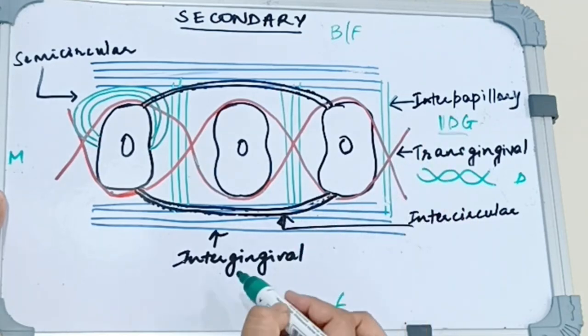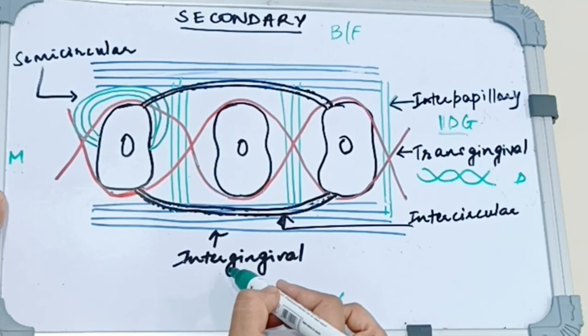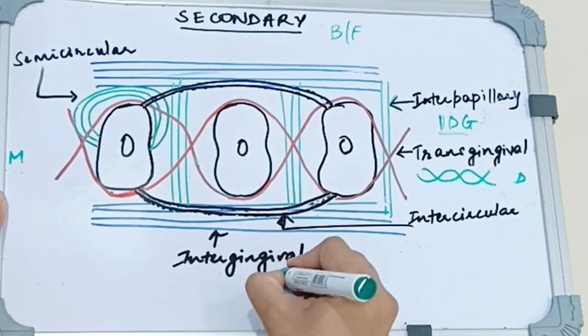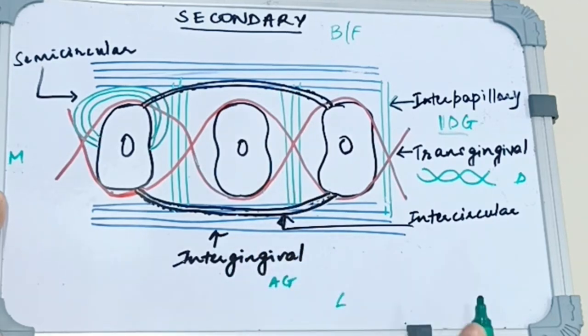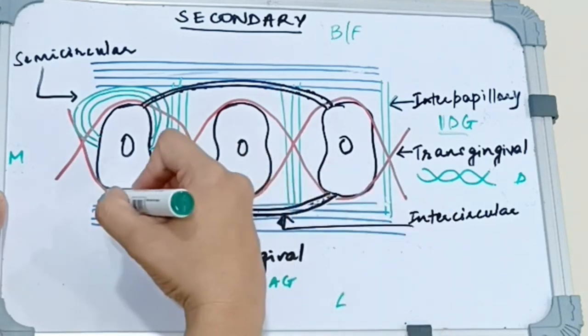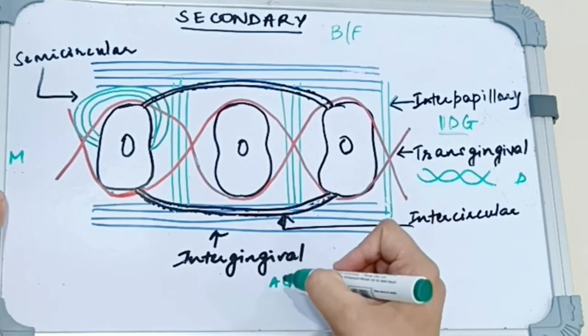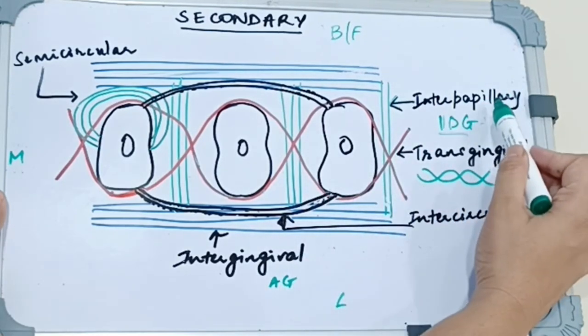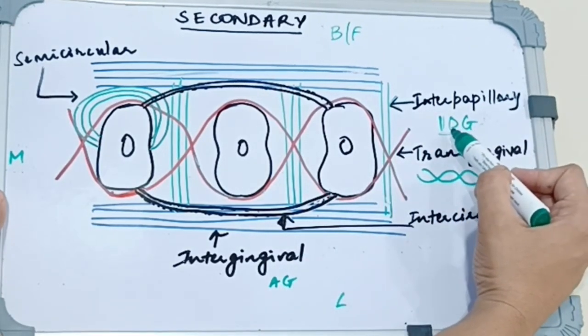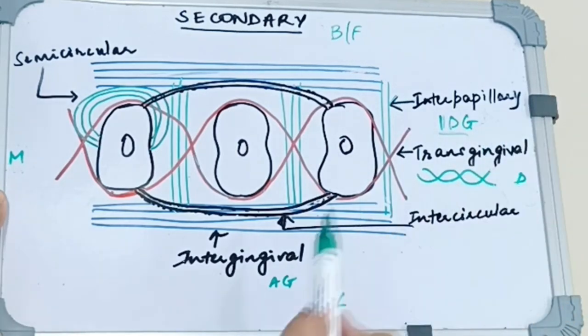Then we have intergingival fibers. These are present in the attached gingiva and they run parallel to the teeth in the vestibular and the oral surfaces and they provide contour and support for the attached gingiva. Interpapillary supports the interdental gingiva, intergingival supports the attached gingiva.